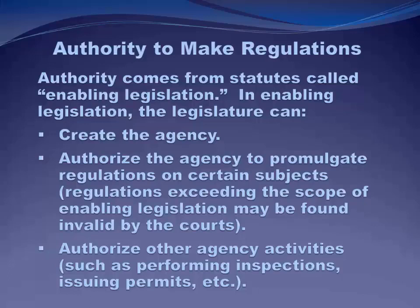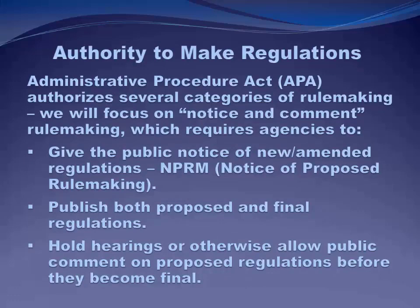In enabling legislation, Congress authorizes the agency to promulgate regulations on certain subjects. If an agency promulgates regulations beyond its enabling legislation, those regulations will be found invalid by a court. Enabling statutes can also authorize agencies to do other things — such as perform inspections like the USDA, issue permits like the Department of Energy, or act like the Department of Transportation. The authority to make regulations also comes from the Administrative Procedure Act, or APA, which authorizes several categories of rulemaking.